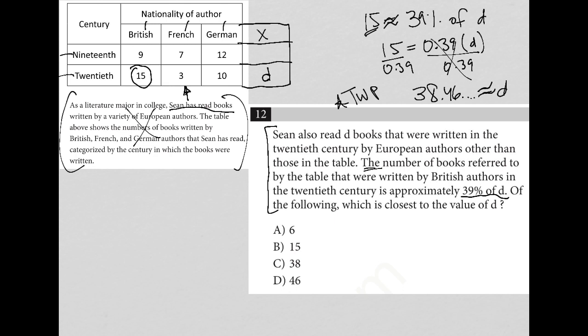Which of the following, which is the closest value of D? Well, we know that D is approximately 38.46. So out of the options, the answer that's closest to that would be choice C. And therefore, that is our correct answer.